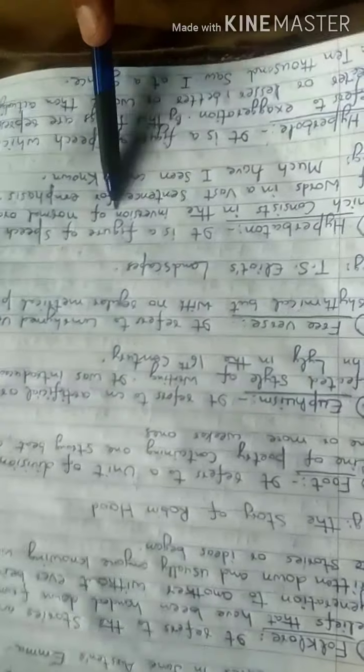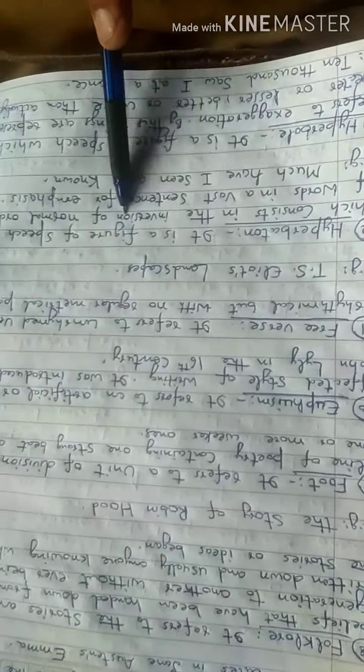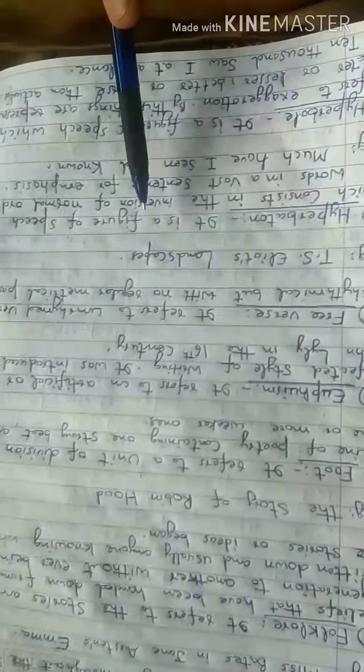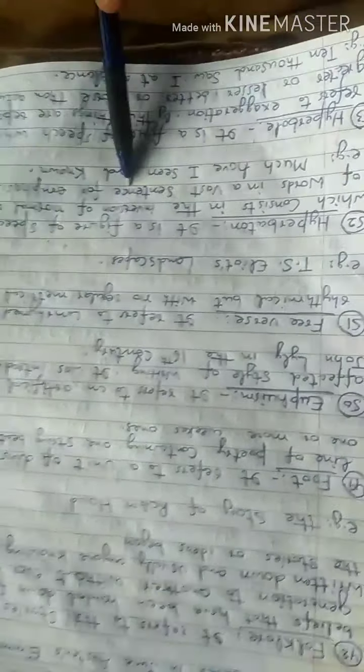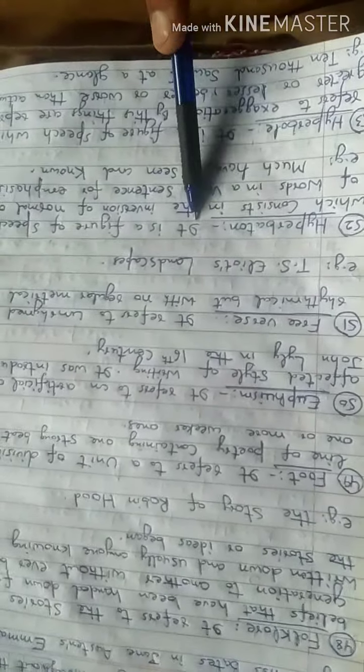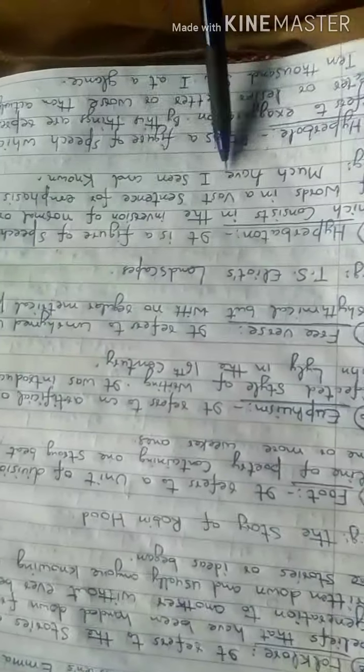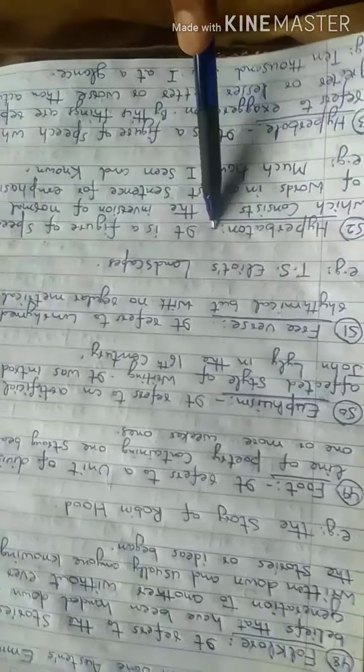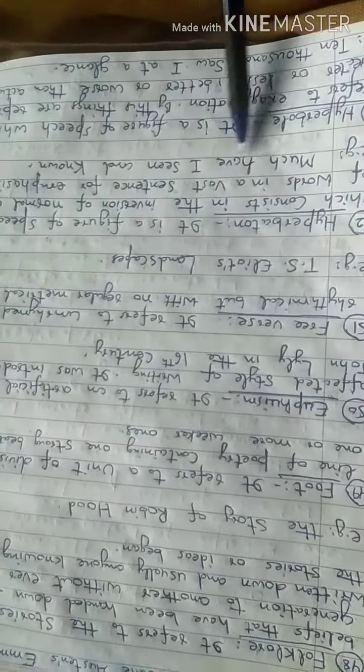Hyperbaton is used to emphasize something and make it more serious or impressive. For example, 'much have I seen and known' is a line written in hyperbaton.